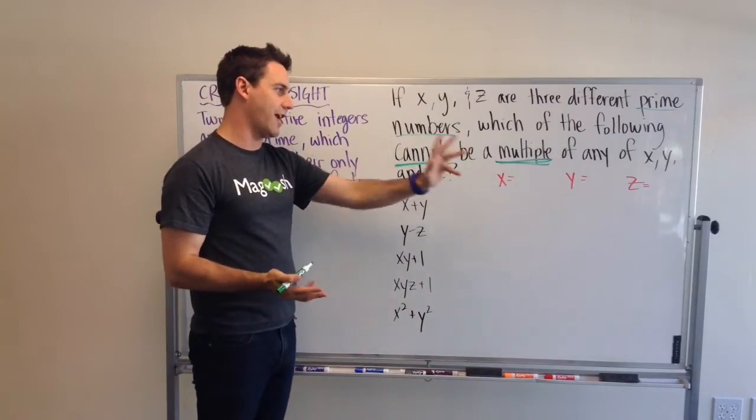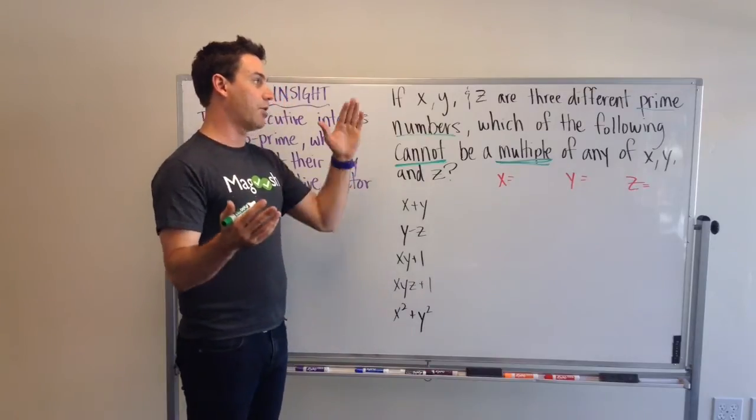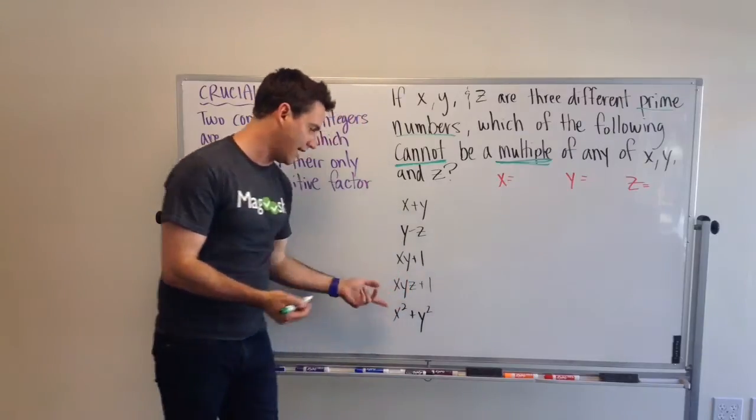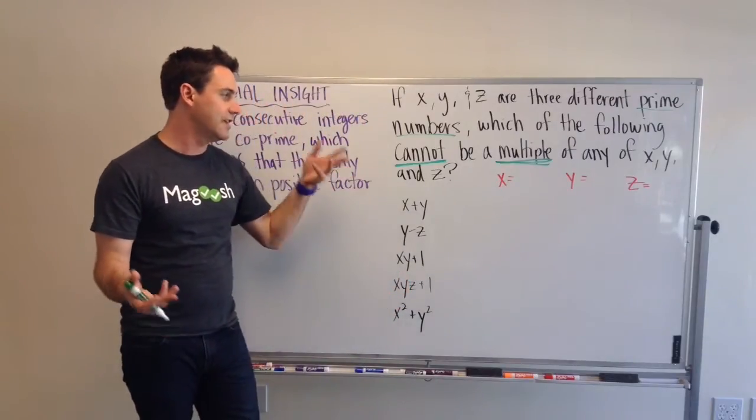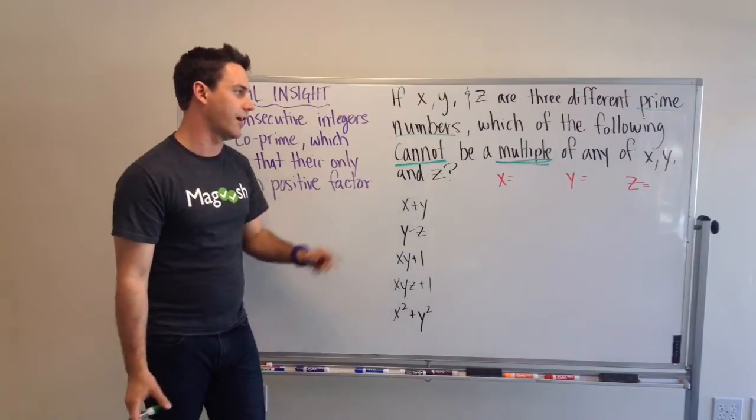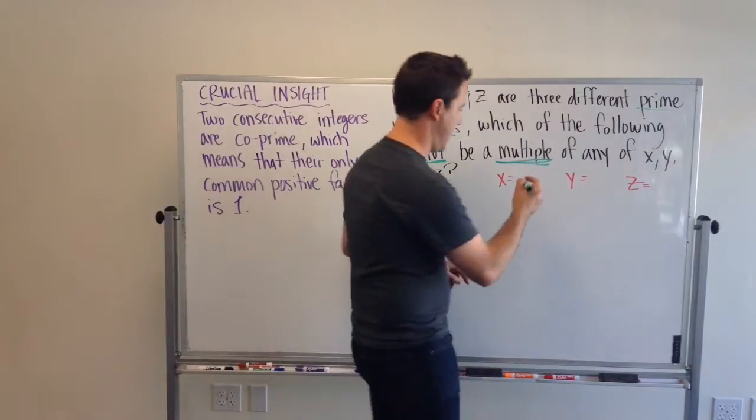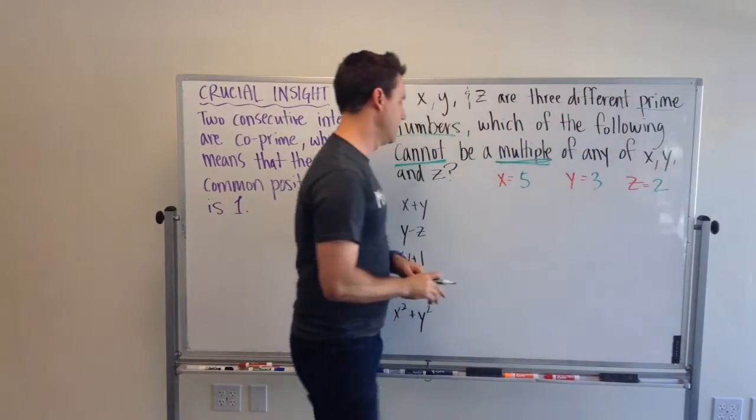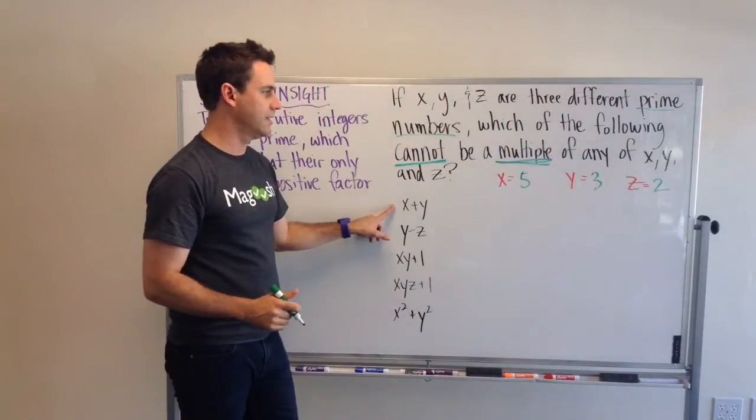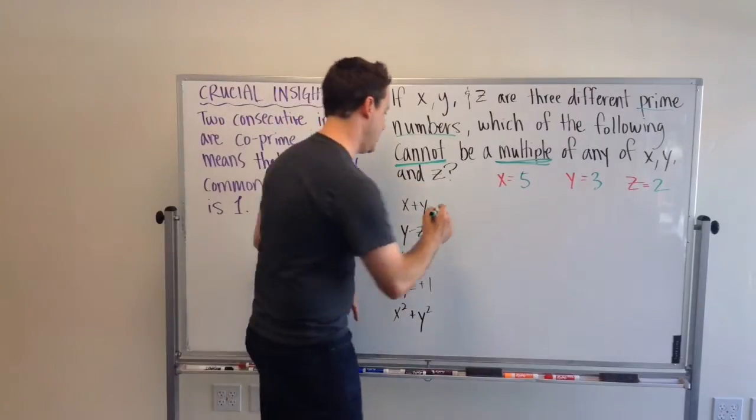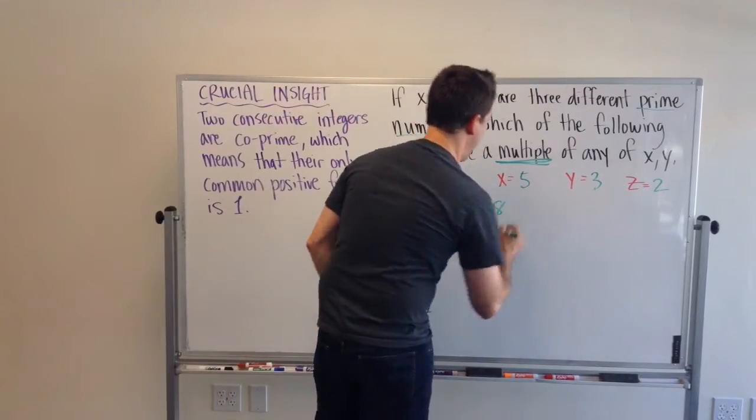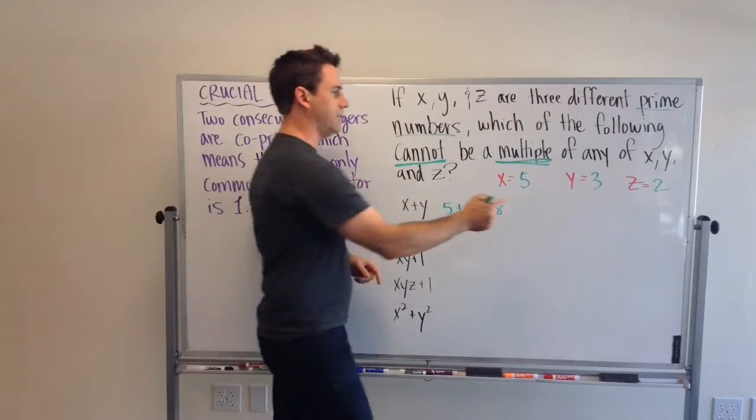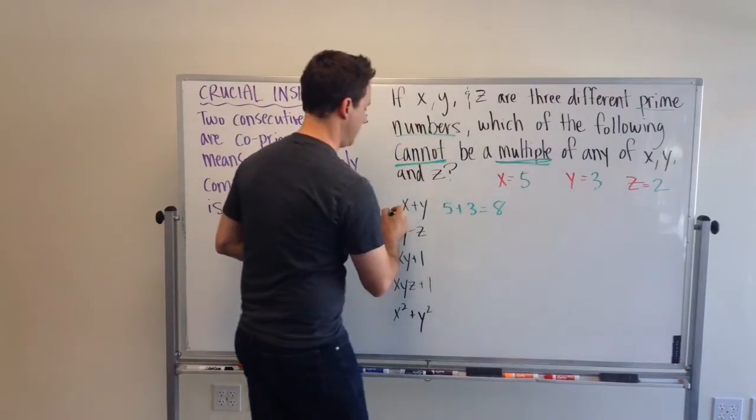As you can see, I have my x, y, and z here. We can just choose prime numbers to plug into our answer choices and find which one of these answers is not a multiple of x, y, or z. So, let's say that this is 5, 3, and 2. So, x plus y, 5 plus 3, that equals 8. Is 8 a multiple of one of these numbers? Yes, it's a multiple of 2. So, we can eliminate it.